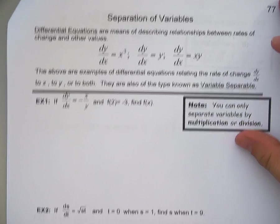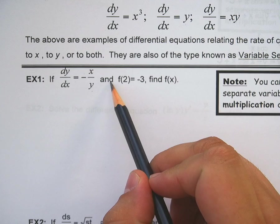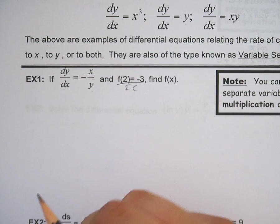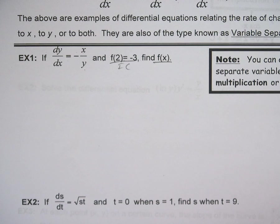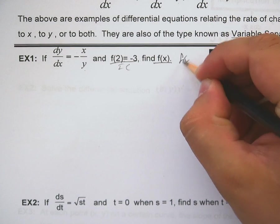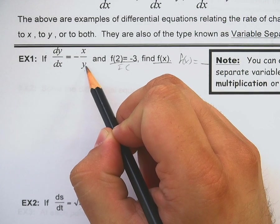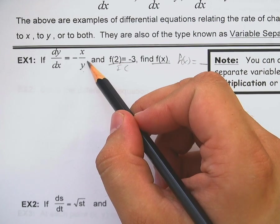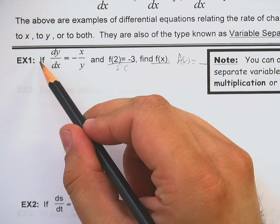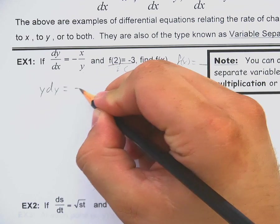So let's try example number one here. It says if dy/dx equals -x/y and f(2) = -3, this is my initial condition, find f(x). So I'm going to take this function and get everything that involves y over here and everything that involves x over here. It's as simple as multiplying y to both sides to cancel it over here, move it over here, and multiplying dx to this other side. I end up with y dy equals -x dx.